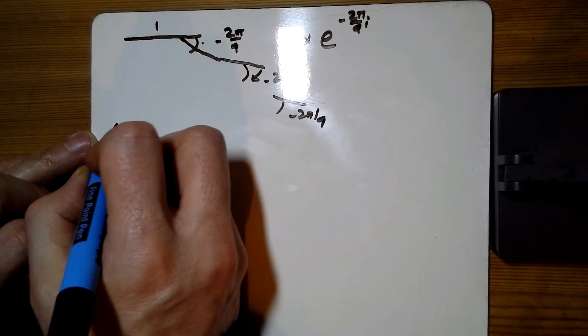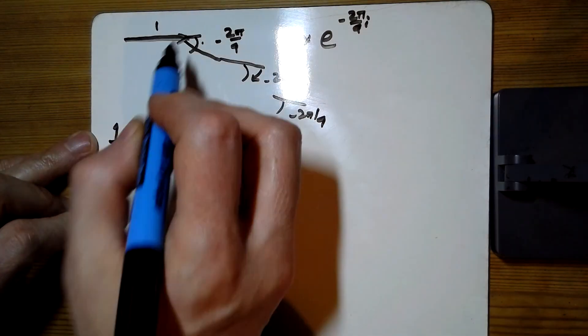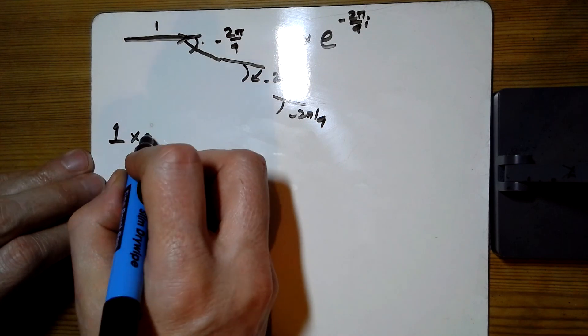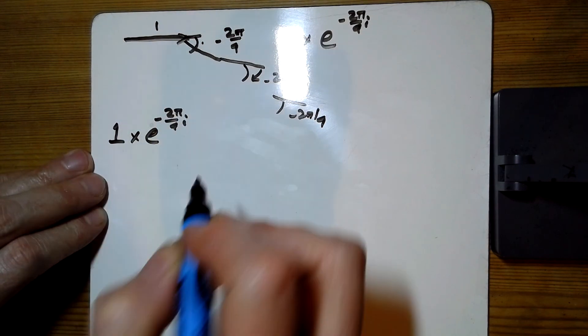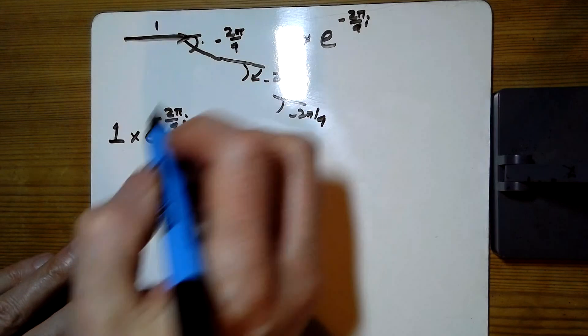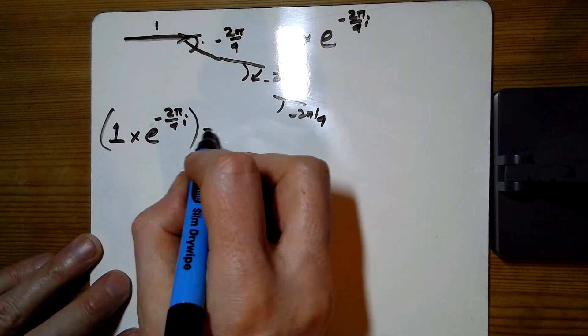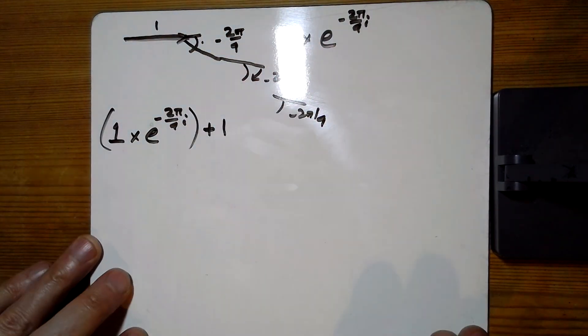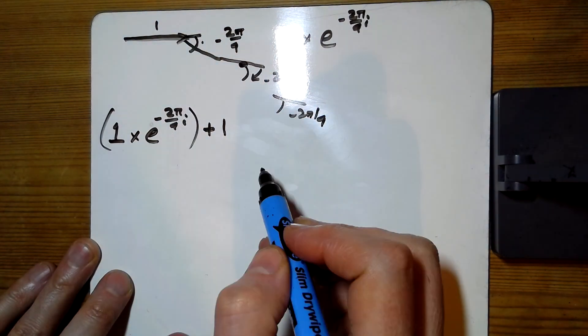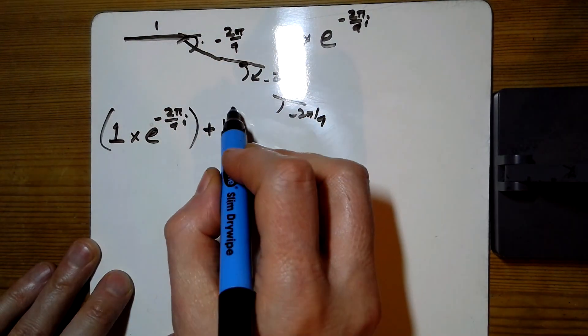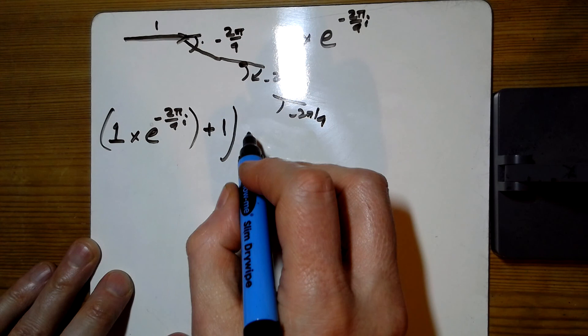So the first bit's fine, it just goes one there to there. But then we need to times that by e to the minus 2pi over 9i to turn there. And then it needs to go another one. So that's the distance to there.